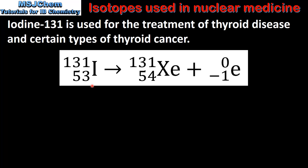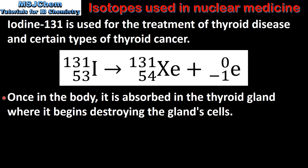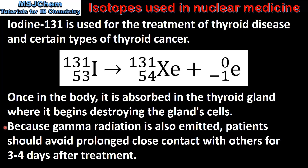It undergoes beta decay according to this equation. Once in the body it is absorbed in the thyroid gland, where it begins destroying the gland cells. Because gamma radiation is also emitted, patients should avoid prolonged close contact with others for 3-4 days after treatment.